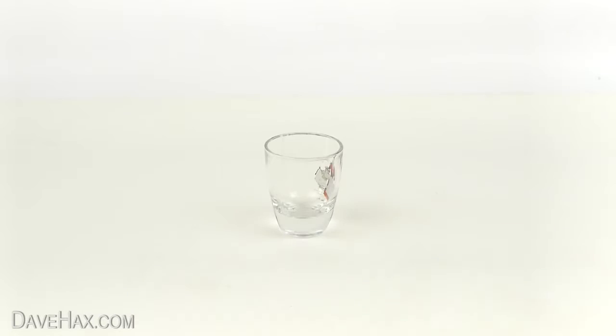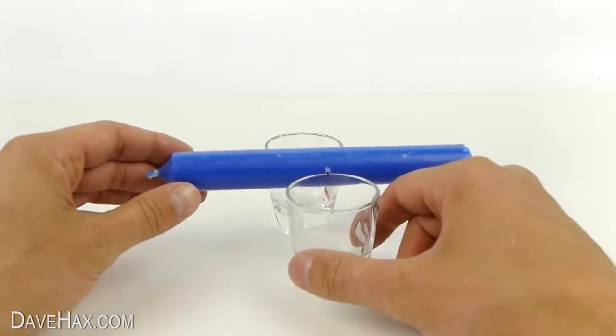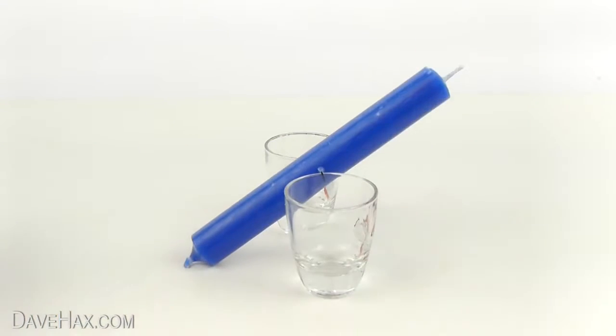Next, take a couple of small glasses and balance the candle in between them like this. You'll probably find the candle falls to one side because it's not perfectly balanced.